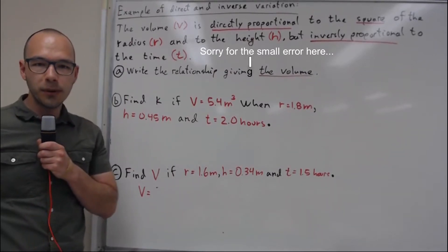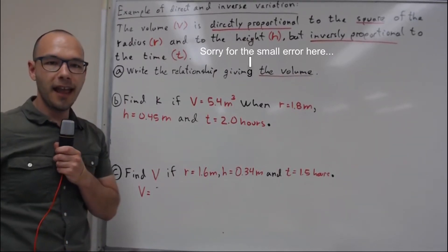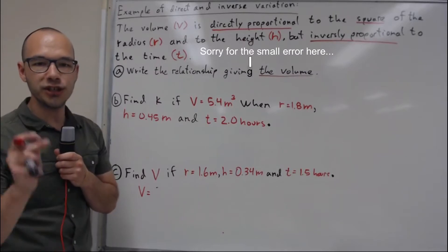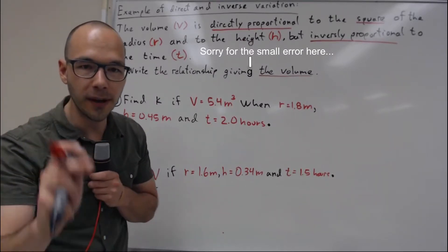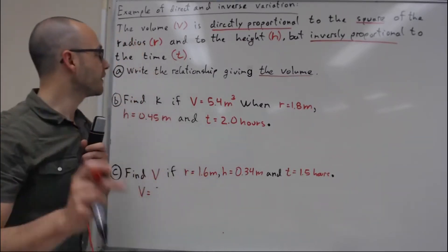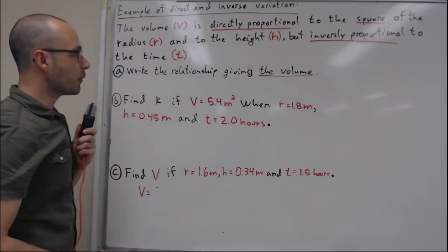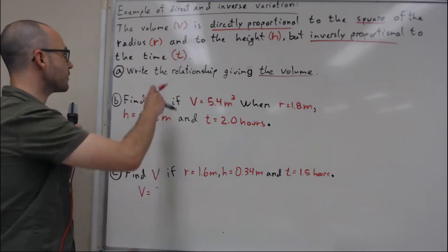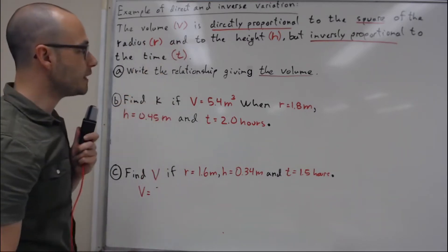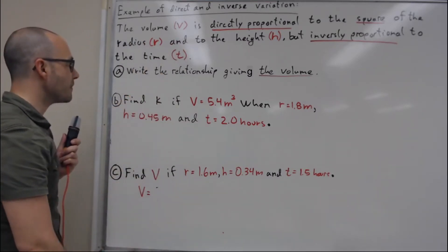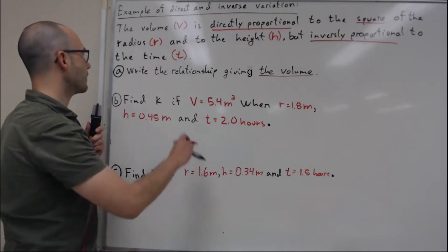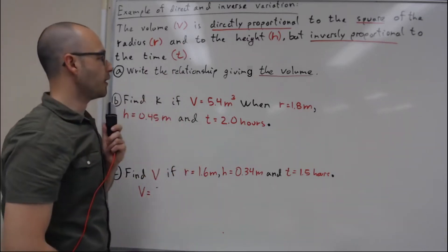We're going to do an example of direct and inverse variation in the same problem. The volume V is directly proportional to the square of the radius r and to the height h, but inversely proportional to the time t.